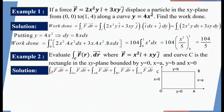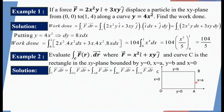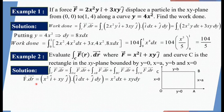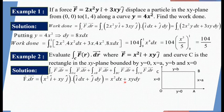The integral C of vector F dot dr along the rectangle boundary can be split into four parts: integral along OA, plus integral along AB, plus integral along BC, plus integral along CO. This is a closed integration moving in the anti-clockwise direction. With vector F equals x²i plus xyj and vector dr equals i dx plus j dy, the dot product vector F dot vector dr equals x² dx plus xy dy.